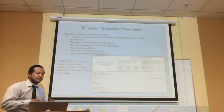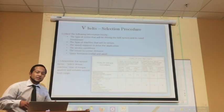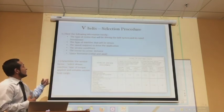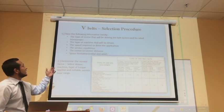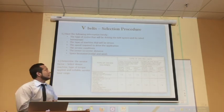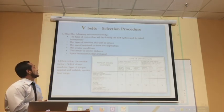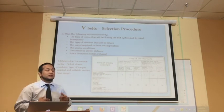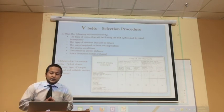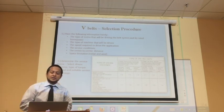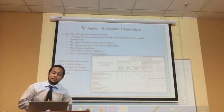The first thing to do when choosing a belt is to have the following information handy: the type of motor that will be driving the belt system and its rated horsepower, the type of machine that will be driven, the speed required to drive the application, and the service conditions, to name a few.